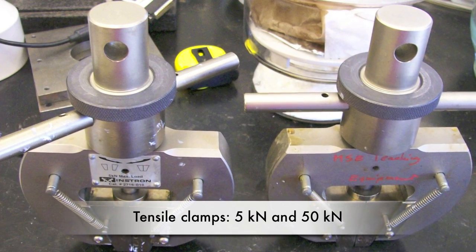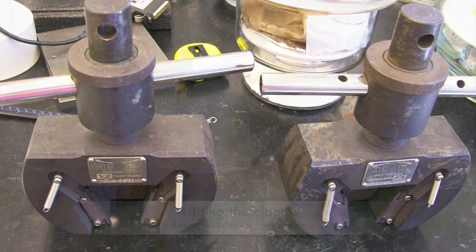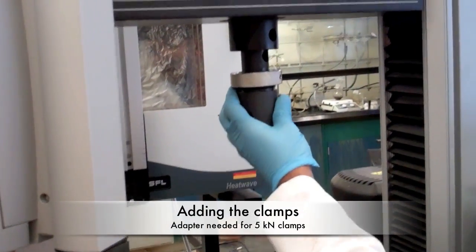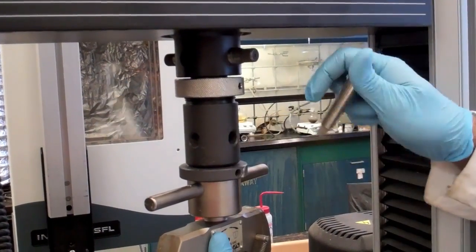For tensile tests, 5 kN clamps or 50 kN clamps are used, depending on the load that will be imparted on the sample. To install the 5 kN clamps, an adapter must be added using a pin. Then the top clamp can be added in a similar manner.